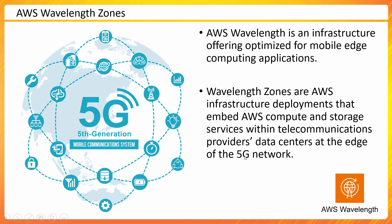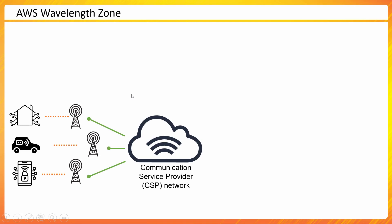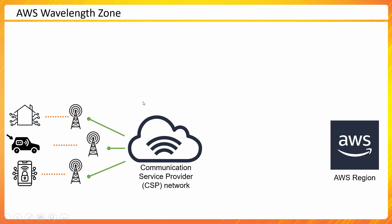Wavelength Zones are AWS infrastructure deployments that embed compute and storage services within telecommunication providers' data centers at the edge of the 5G network. Let me explain that pictorially. Consider a device or application using 5G — it establishes connectivity over 5G via a wireless connection to nearby mobile towers, then connects to a communication service provider, or CSP. Examples include Vodafone, Verizon, British Telecom, or O2 in the UK. Data from a smart car first hits the CSP network and then travels to the AWS region.